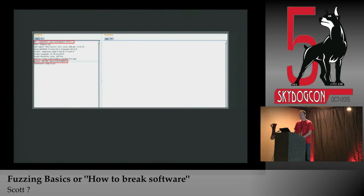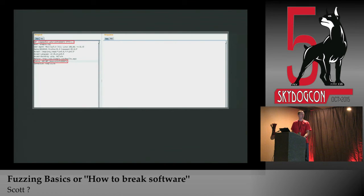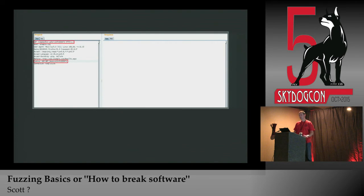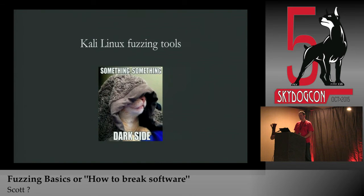This is a screenshot of the Burp Suite repeater function. I've highlighted in red rectangles the areas where I was wanting to fuzz — specifically the parameter passed to 'imagehandler.ashx' and also the cookie value. I just put 'fuzz data' in there to give myself a reminder of where I want to change something.